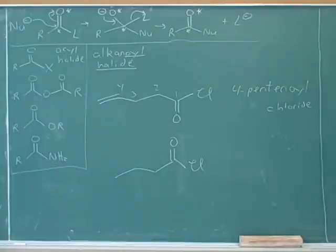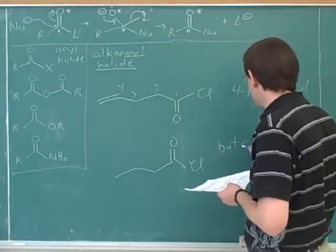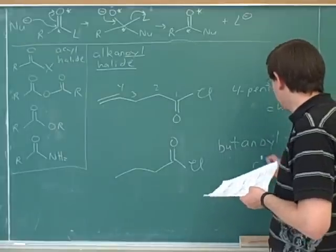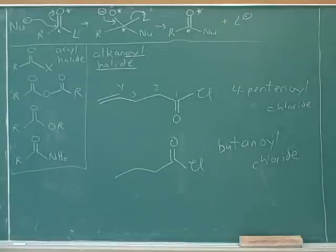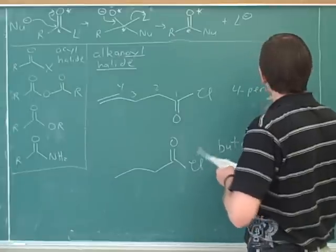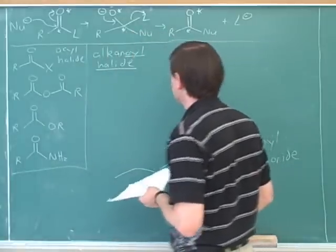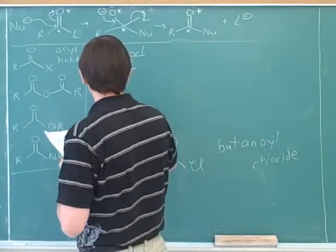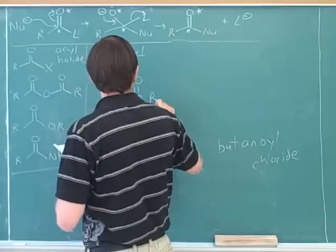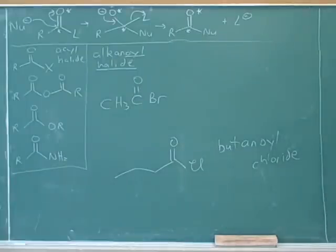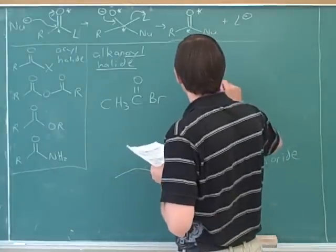So what would be a good name for this compound? Butanoyl chloride. But, because there's 4 carbons, and because there's no double bonds, and oyl chloride, because it's an acyl chloride. That's exactly right.